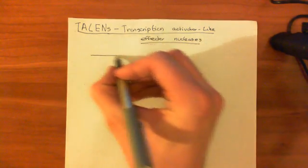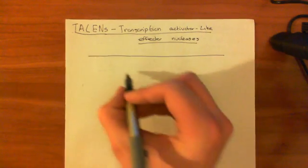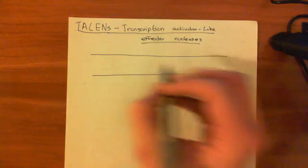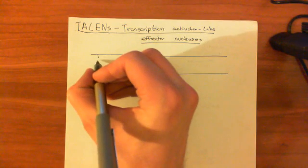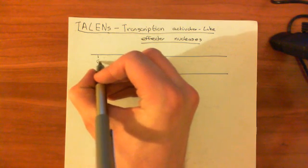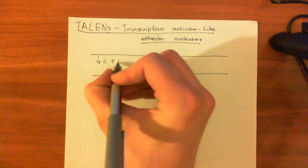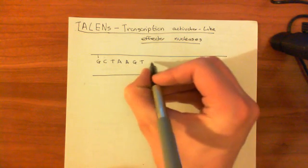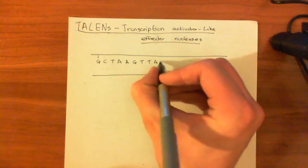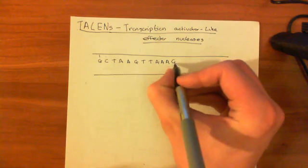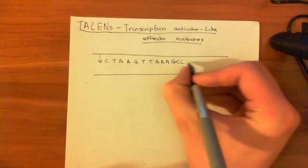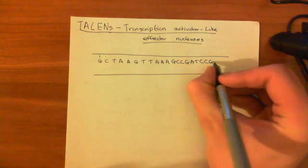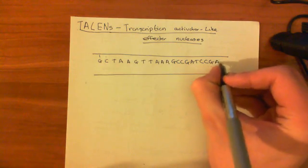Let me draw out a DNA sequence and then I'll discuss what TALENs are going to do. So let's make up some nucleotides: G-C-T-A-A-G-T-T-A-A-A-G-C-C-G-A-T-C-C-G-A-T, and then we'll put in the complementary strand: C-G-A-T-T-C-A-A-T-T-T-C-G-G-C-T-A-G-C-C-T-A-G.